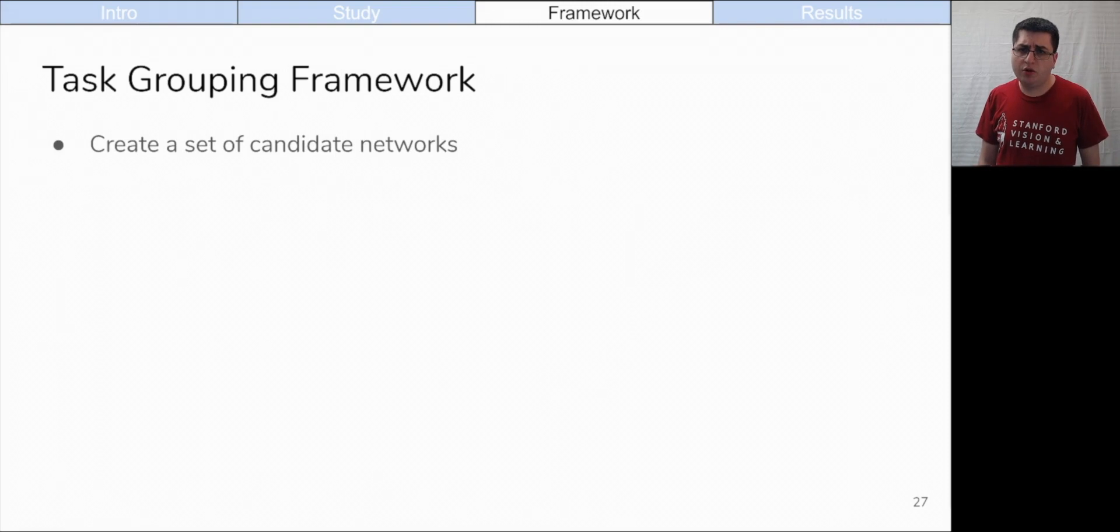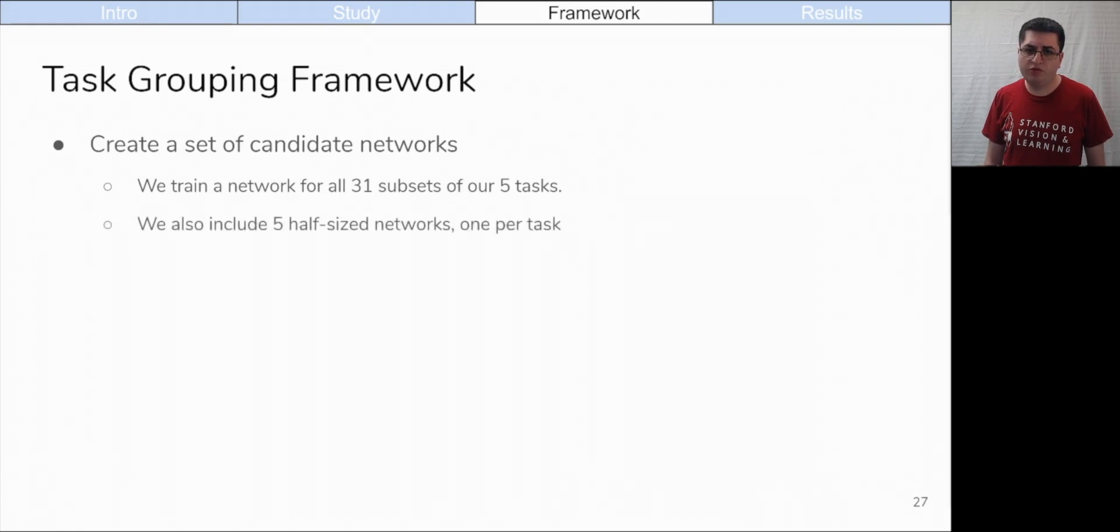First, we create a set of candidate networks. We're going to choose our networks that we keep from those candidate set. The candidate set can include networks of any varying size and with any combinations. For our experiments, we train a network for all 31 subsets of our five tasks. We also include five half-sized networks, one for each task. After training these networks, the idea becomes to pick the subset of networks that together perform the best on the given tasks and fit within the budget.